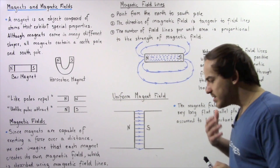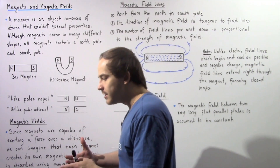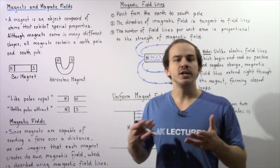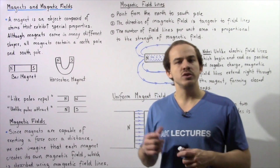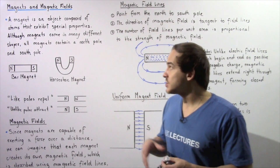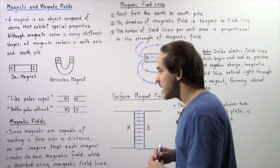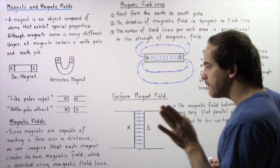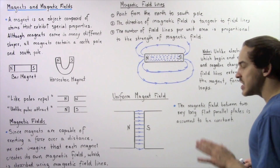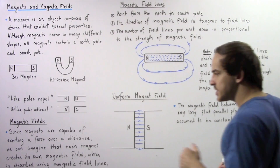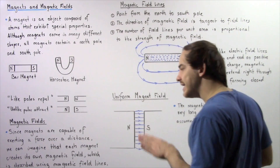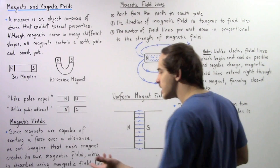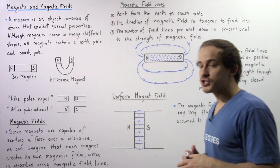In the same exact way that we use electric fields to describe electric forces, we can use magnetic fields to describe magnetic forces that magnets create. Since magnets are capable of exerting a force over a distance, just like electric charges can, we can imagine that each magnet creates its own magnetic field which is composed of magnetic field lines.